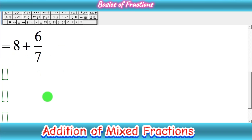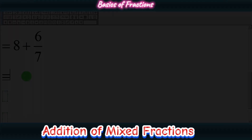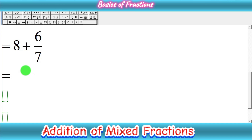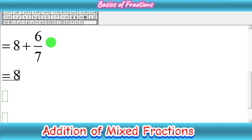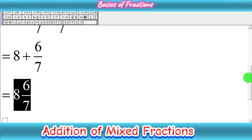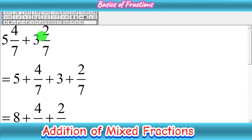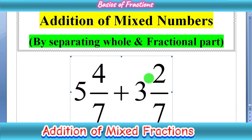We can remove the addition sign between the whole and fraction, giving us 8 whole 6 upon 7. Since our question was in mixed fraction form, we write the answer in mixed form as well: 8 whole 6 by 7. This is our final answer. We have added 5 whole 4 upon 7 plus 3 whole 2 upon 7 by separating the whole part and fractional part. I hope this was helpful. Thanks for watching and don't forget to subscribe to my channel!